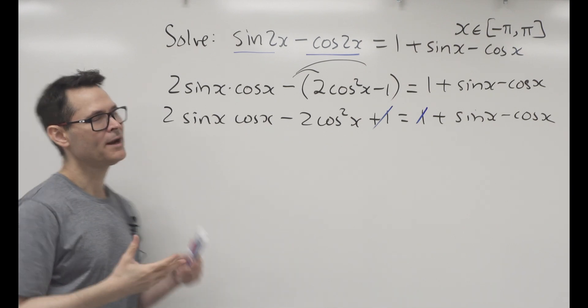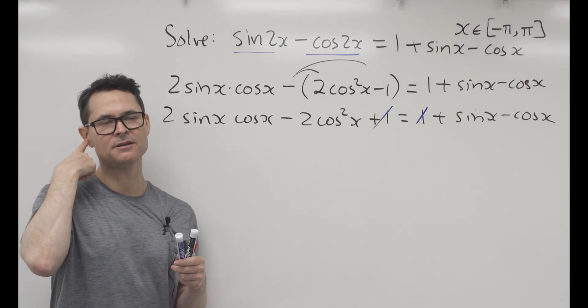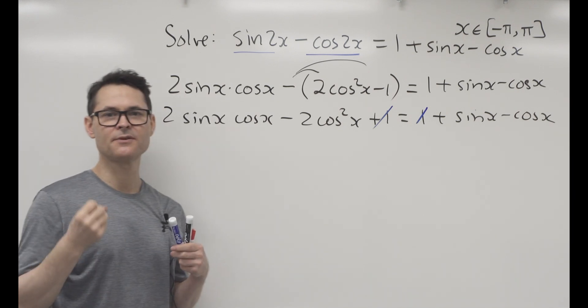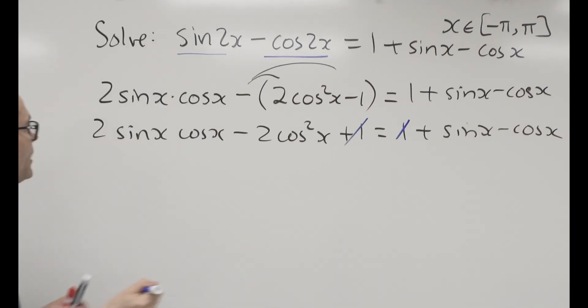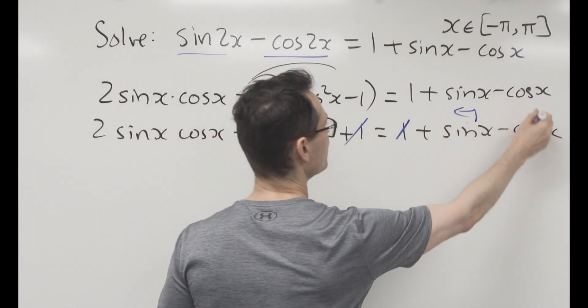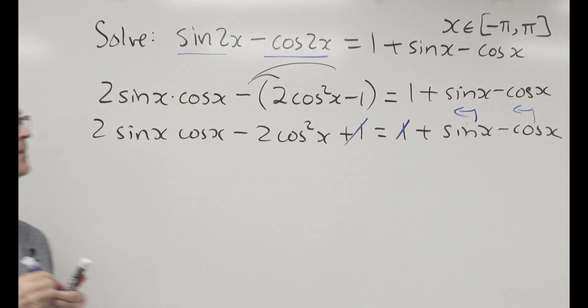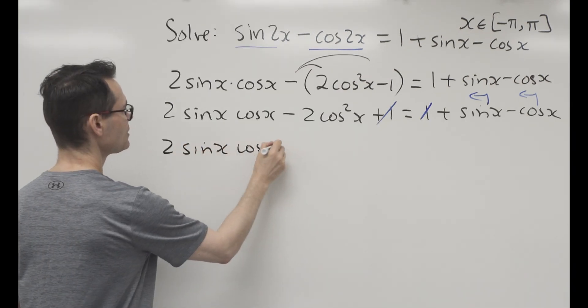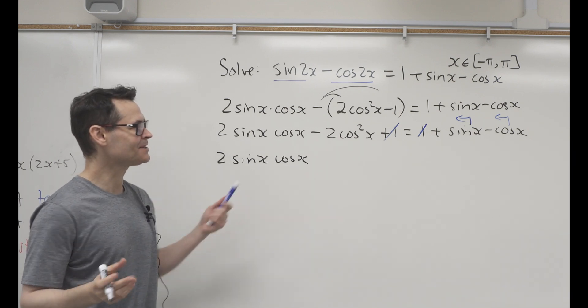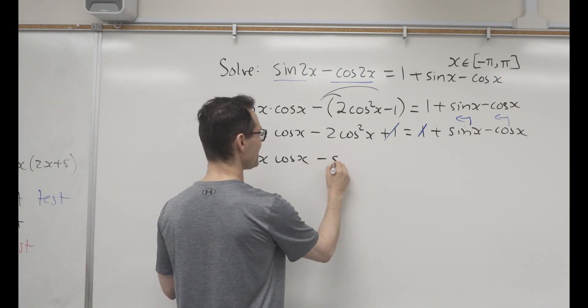So whenever I get 4 terms, I immediately begin to think: how can I factorize? And I probably will use factor by grouping. So what I'm gonna do is I'm gonna bring these two terms over so I can set the one side equal to 0. Okay, and so that's gonna give a 2 sine x cos x. I'm already sort of strategizing on grouping, so I'm just gonna, for no reason, group the sine x with this one.